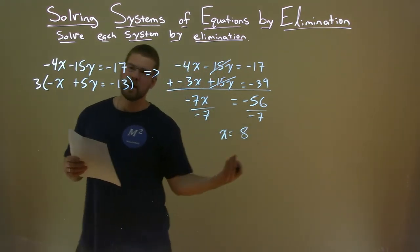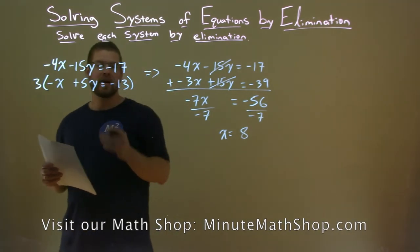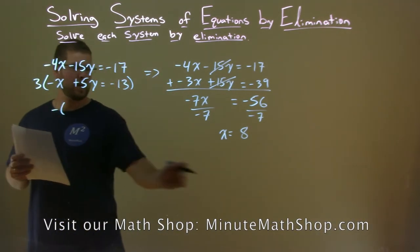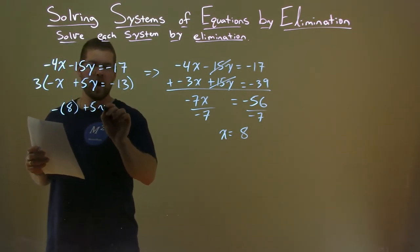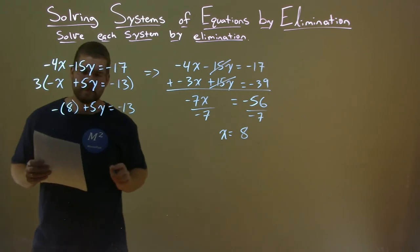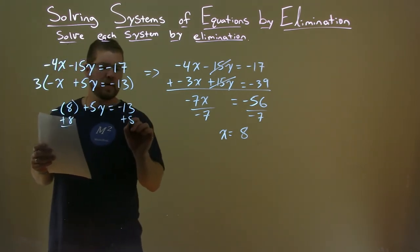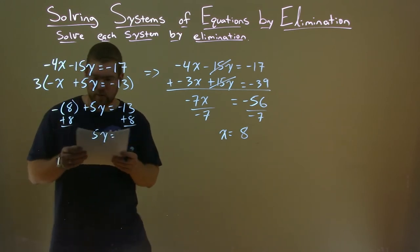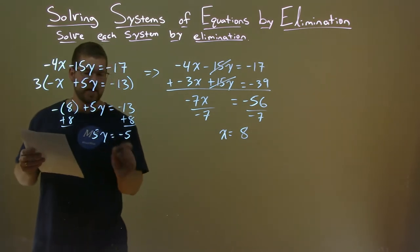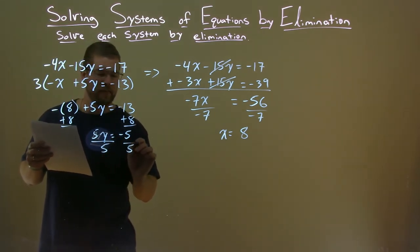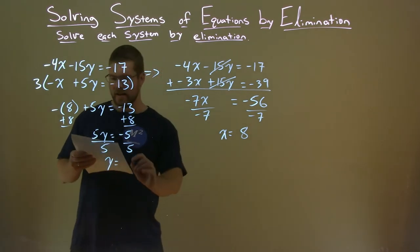We take that information and plug it into one of our other equations and solve for y. I like the second equation because it looks simpler. Negative, instead of x, put the 8 in it. Plus 5y equals negative 13. Well, minus 8, let's add 8 to both sides here. And we're left with 5y equals, well, negative 13 plus 8 is negative 5. Divide both sides by 5. y is by itself. Negative 5 divided by 5 is negative 1.